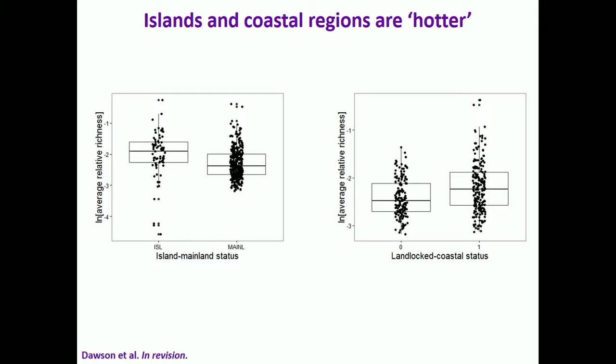Looking at the island-mainland difference: mainland regions tend to have fewer alien species on average. And if we look just at mainland regions, yes, coastal regions do tend to have a higher alien species richness compared to landlocked regions.